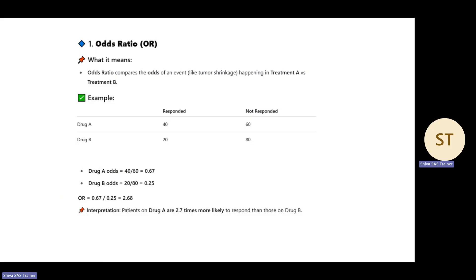In Drug B, 20 responded and 80 did not respond. Drug A odds equals 40 divided by 60. Odds ratio equals Drug A odds divided by Drug B odds, which gives us a value. This means patients on Drug A are 2.7 times more likely to respond than Drug B.